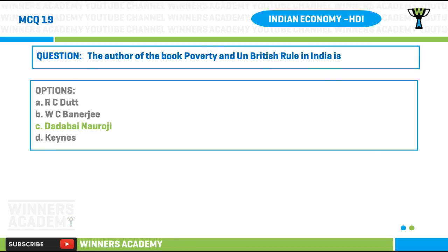Question number nineteen: the author of the book 'Poverty and Un-British Rule in India' was — options: A) RC Dutt, B) WC Banerjee, C) Dadabhai Naoroji, D) Keynes. Since this was not discussed in my earlier lessons, the answer has been provided for you.